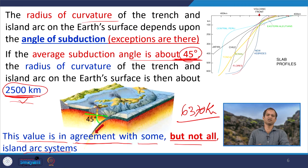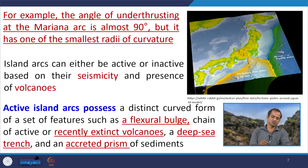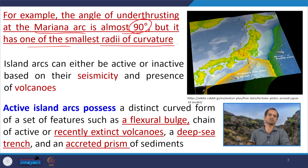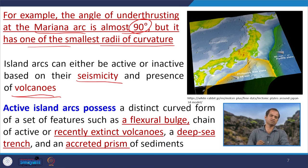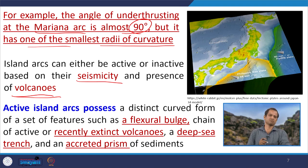The radius of curvature is proportional to the angle of subduction alpha, but it agrees with some systems and not many others. There are other reasons also influencing the angle of subduction. For example, the angle of underthrusting of the Mariana arc is around 90 degrees yet it has one of the smallest radii of curvature, so the formula does not apply everywhere. Island arcs can either be active or inactive, based on seismicity and volcanic activity.